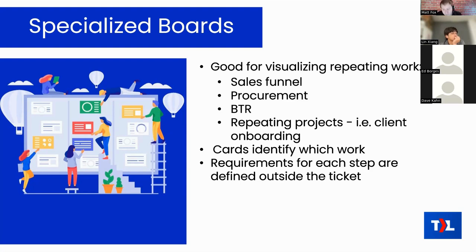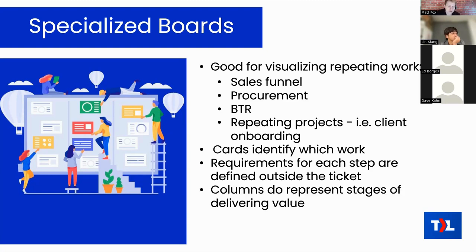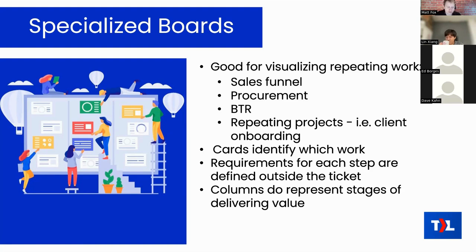The most obvious thing about specialized boards: the columns represent the actual stages of delivering value, so ordering them left to right is easy and clear — everyone would identify the same ordering. Work very rarely goes backward on a specialized board, whereas on a general board it's more common for something to move from right to left. On a general board, columns like 'waiting' and 'scheduled' are hard to order because neither is clearly closer to completion than the other.